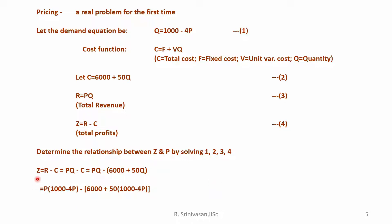Take Z as R minus C. What is R? R is PQ minus C. Then substitute for C: PQ minus (6000 + 50Q). Then again substitute for your Q, and you get the resulting equation.